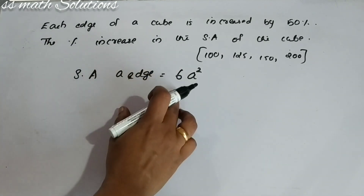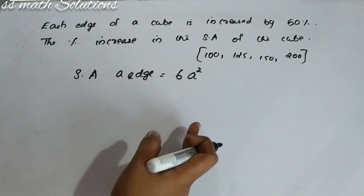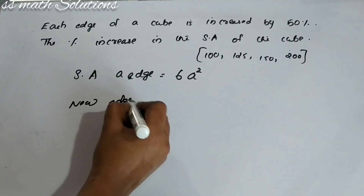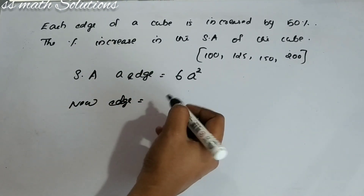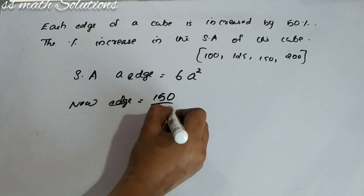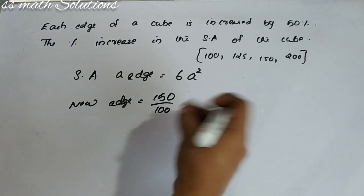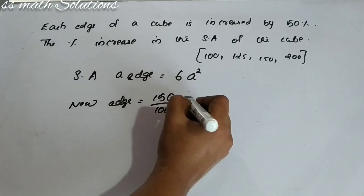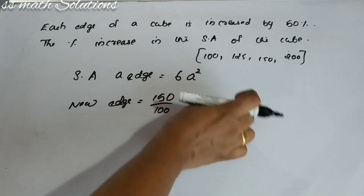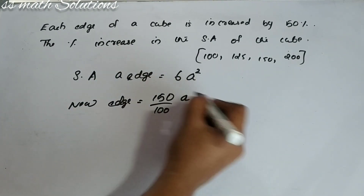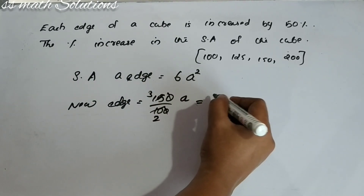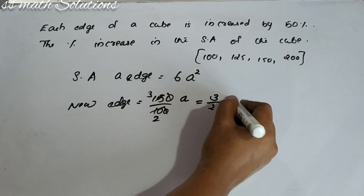Now for the percentage increase, A changes by 50% increase. So the new edge is 150/100 of A. Since the original A is 100, the 50% increase gives us 150/100 · A. Simplifying: 5 twos cancel and 5 threes give 15, so the new edge is 3/2 · A.